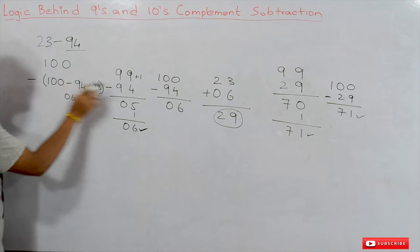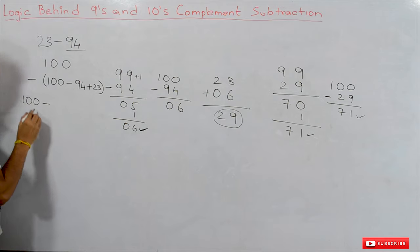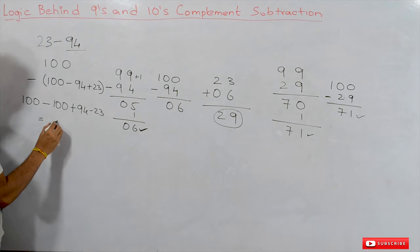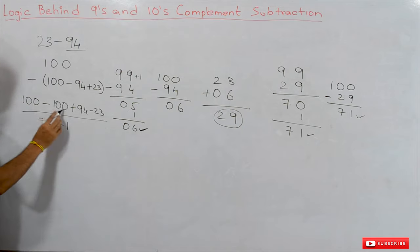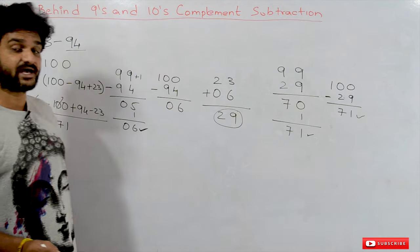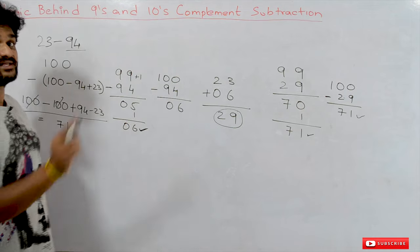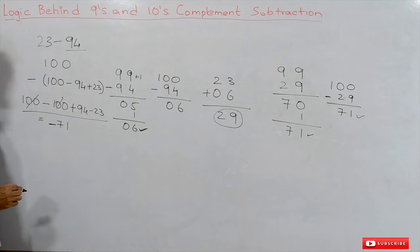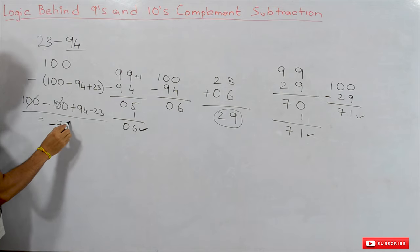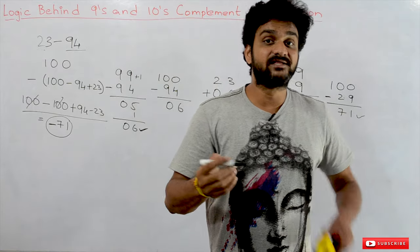Expanding: the 10s complement of 29 is 100 minus 29, and 29 is (100 minus 94 plus 23). So it becomes 100 minus 100 plus 94 minus 23. The 100s cancel, leaving 94 minus 23, which is 71. Since there was no carry, we take the 10s complement of the result and add a negative sign. Therefore the result of 23 minus 94 is negative 71.